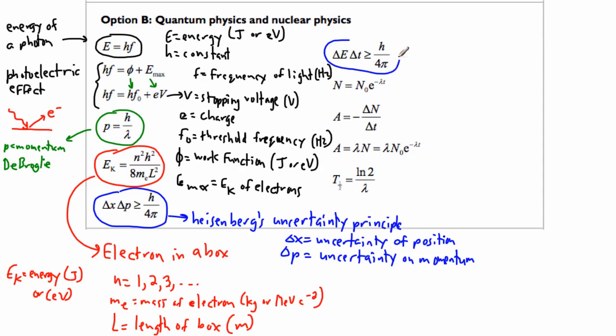Similar thing right here. This is also Heisenberg's uncertainty principle. Except we have delta E, which is the uncertainty on energy, and delta T, the uncertainty on time. Those are related to Heisenberg's uncertainty principle.